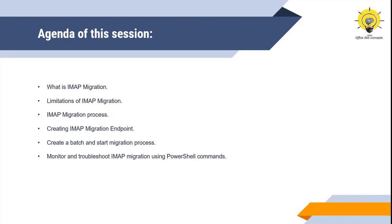In this particular video, we will be talking about IMAP migration. We will be discussing what is IMAP migration and in what scenarios IMAP migration is performed. We will be discussing what are the limitations of IMAP migration, what are the prerequisites or the steps involved in IMAP migration. Then I will demonstrate how to create an IMAP migration endpoint, and we will migrate emails from an Outlook.com account to Office 365. Also, I will be showing you how to troubleshoot the migration process using PowerShell commands.